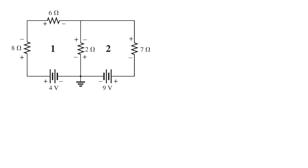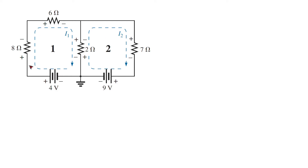The current in loop one is equal to i1 and the current in loop two is equal to i2.